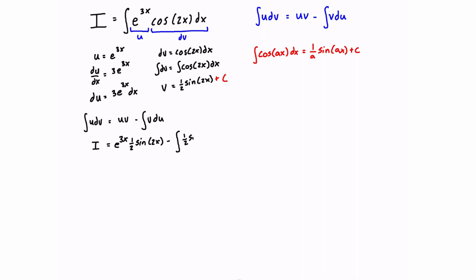We still have an integral in the solution for I, so we need to deal with it. Let's simplify by pulling out the factor 3/2 outside the integral, and rearrange into a more familiar form: the integral of e to the 3x times sine of 2x dx. This looks like another integration by parts problem, so we want to apply the formula again.